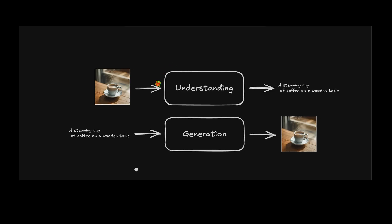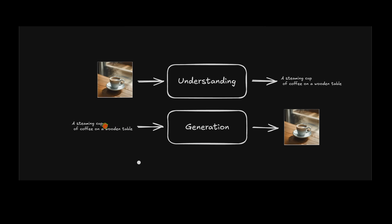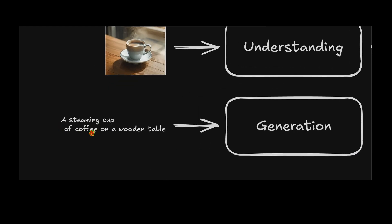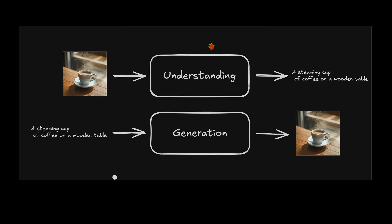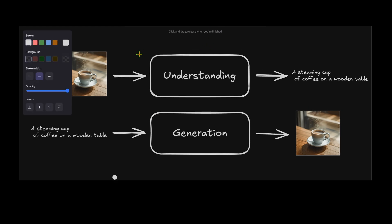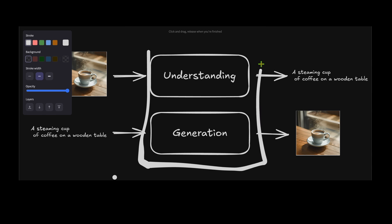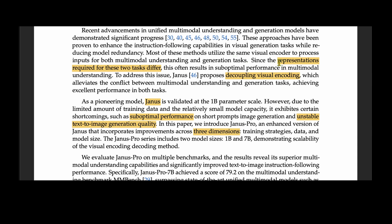Multimodal models can do two things: understanding of the visual input — for example, given an image, it outputs 'a steaming cup of coffee on a wooden table' — or the opposite, where we give a text prompt and the model generates a corresponding image. Unified models combine both capabilities in a single model. The main challenge is that the representations required for the two tasks are different.